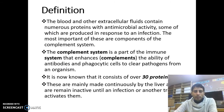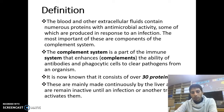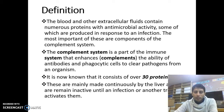The blood and other extracellular fluids contain numerous proteins with antimicrobial activity, some of which are produced in response to an infection. The most important of these are components of the complement system. The complement system is a part of the innate immune system that enhances the ability of antibodies and phagocytic cells to clear pathogens from an organism. It consists of over 30 proteins, mainly produced continuously by the liver, and remain inactive until an infection or another trigger activates them.